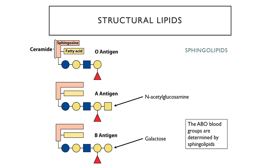If you are blood type O, you lack either the A or the B antigen, so you can't receive blood from someone who has either antigen. However, if you are blood type O, you can donate blood to someone who is type A or B, because it will not be recognized as foreign since you lack either of those antigens.